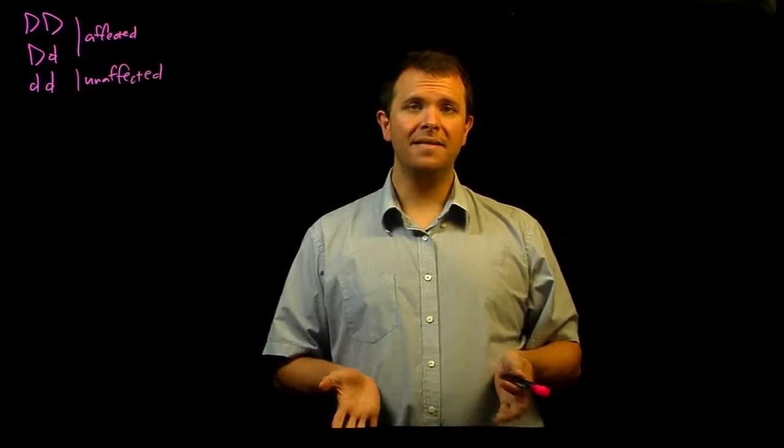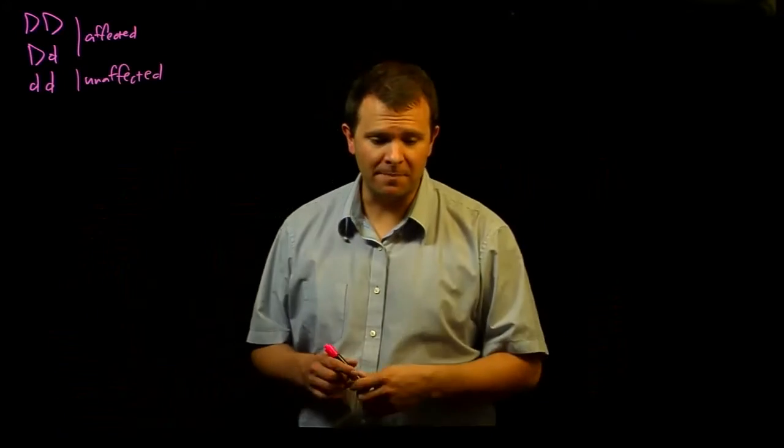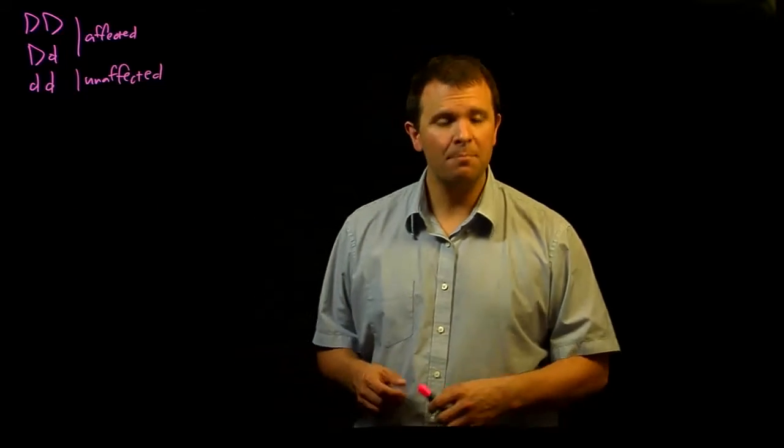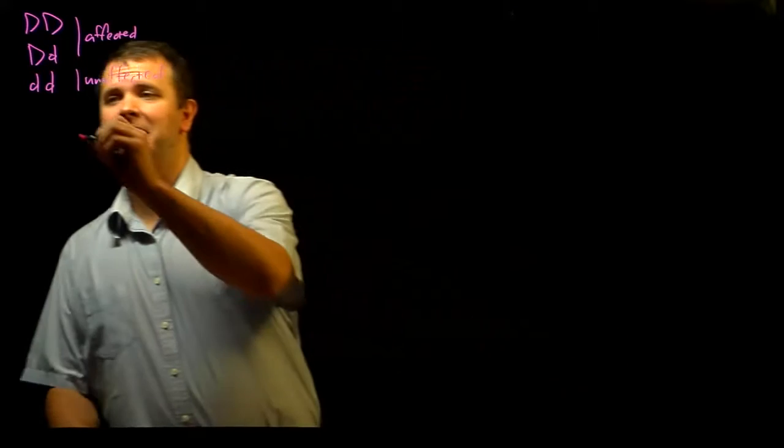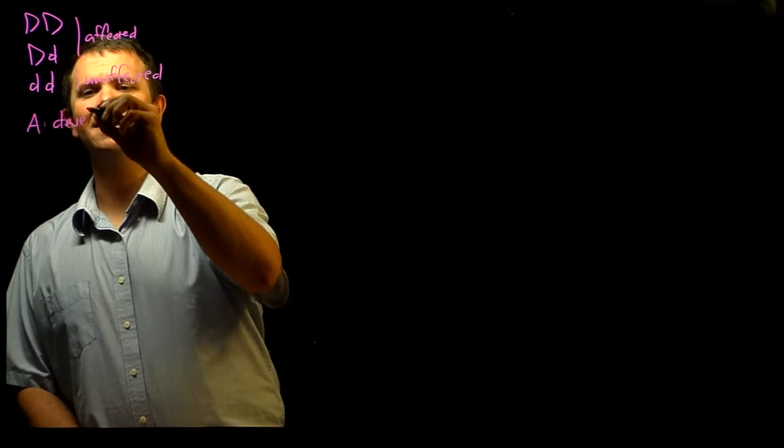And we know that the incidence of Huntington disease in the general population is approximately 2.7 cases per 100,000 individuals. And so if we define event A as develops Huntington,